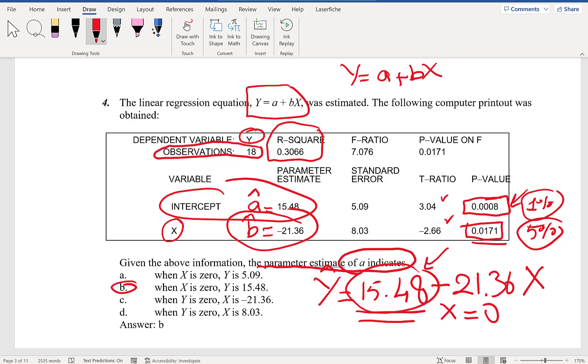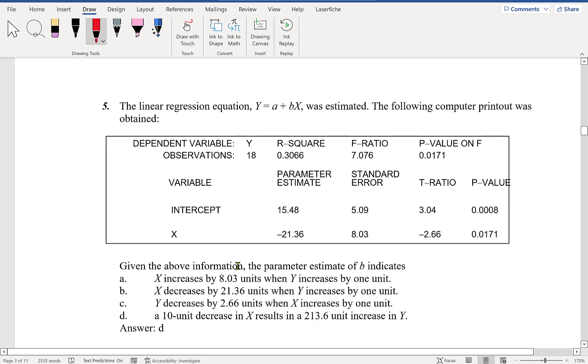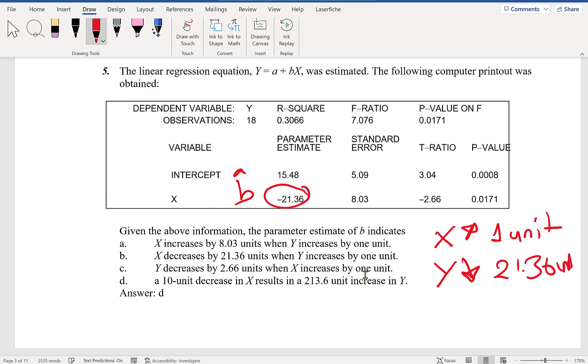Let's look at question number 5. This is beta-hat, which means if X increases by one unit, it will cause Y to decrease by 21.36 units. Does X increase by 8.3 units when Y increases by one unit? Absolutely not, because we're looking at the marginal effect of X—one unit increase or decrease in X and its impact on Y.